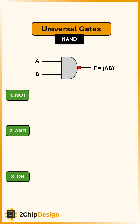First, let's create a NOT gate. If we tie both inputs of a NAND together, the output becomes NOT A. That's our inverter.